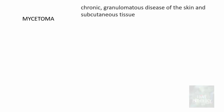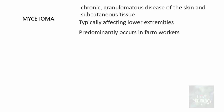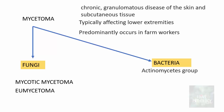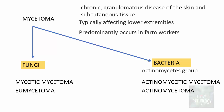Let us understand another terminology referred to as mycetoma. Mycetoma is a chronic granulomatous disease of the skin and subcutaneous tissue, typically affecting the lower extremities and predominantly occurring in farm workers. Mycetoma can be caused by fungi or bacteria. When caused by fungi it is referred to as mycotic mycetoma or eumycetoma. When caused by bacteria of the actinomycetes group it is called actinomycetoma. Do not confuse actinomycosis with actinomycetoma — they are different entities. Actinomycosis is an endogenous infection whereas actinomycetoma is a chronic granulomatous disease affecting the skin and subcutaneous tissue, particularly the extremities.